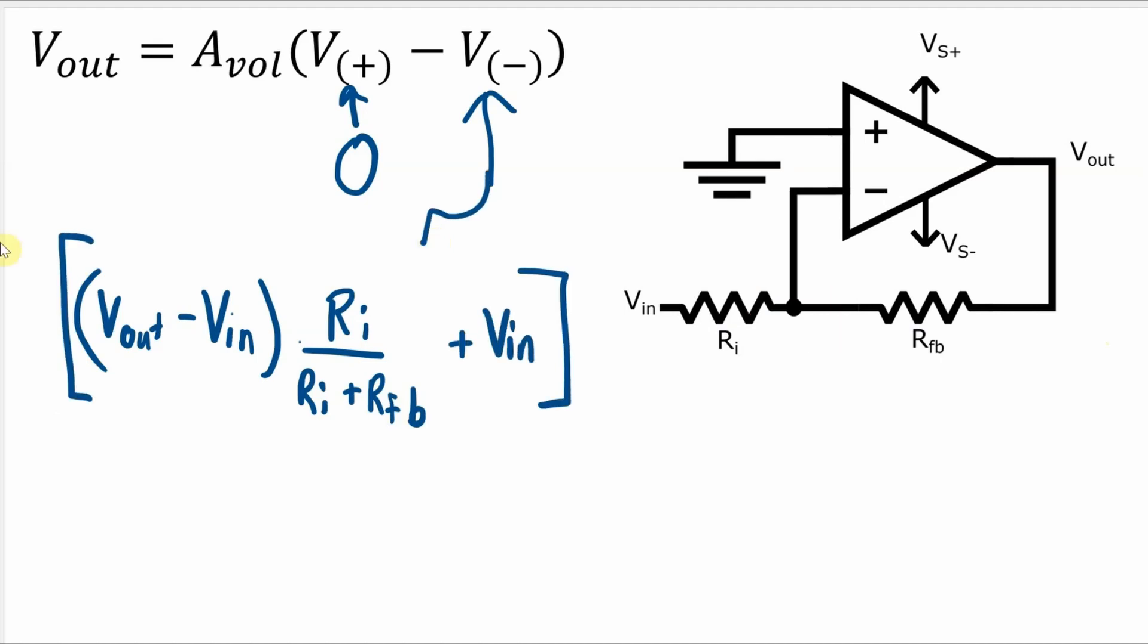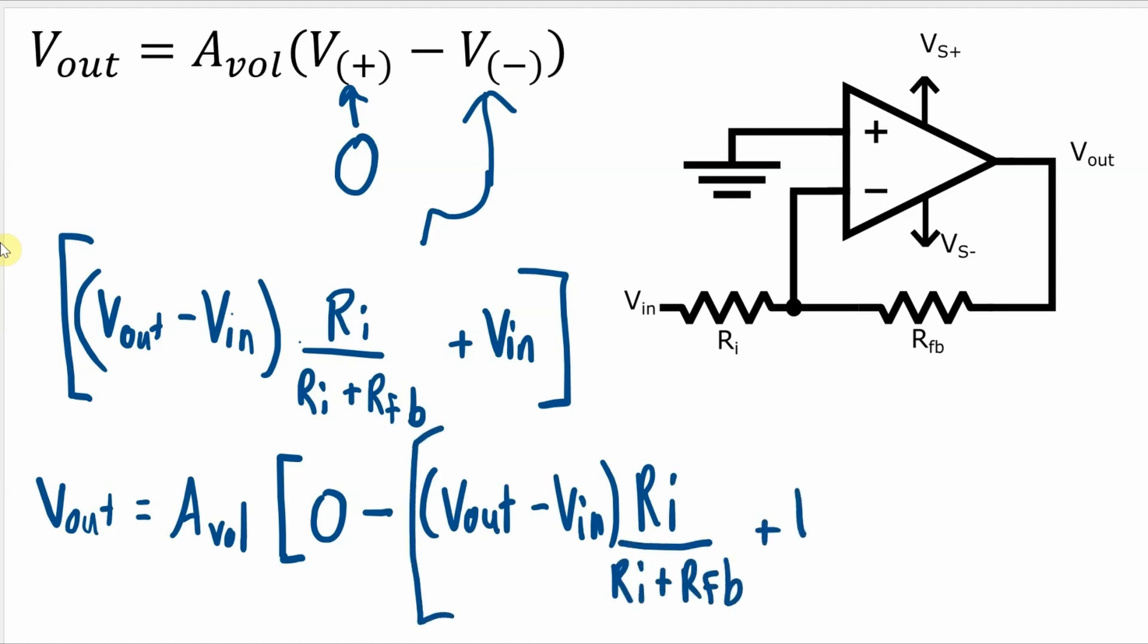So what I'll get for this overall equation is VOUT equals AVOL open loop voltage gain times zero minus VOUT minus VIN times RI over RI plus RFB plus VIN.